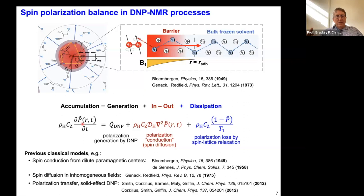The dissipation term is spin-lattice relaxation. So we have terms that look very familiar from mass and energy transport — we're doing a polarization balance. We're not the first to think of this. This was thought of by Bloembergen and Pierre-Gilles de Gennes back in the 1950s, looking at spin conduction from dilute paramagnetic centers using classical models. More recently there's been related work from Bob Griffin's group — Björn Corzilius, Adam Smith, Alexander Barnes — who looked at polarization transfer in solid-effect DNP, all consistent with what I'm going to show.